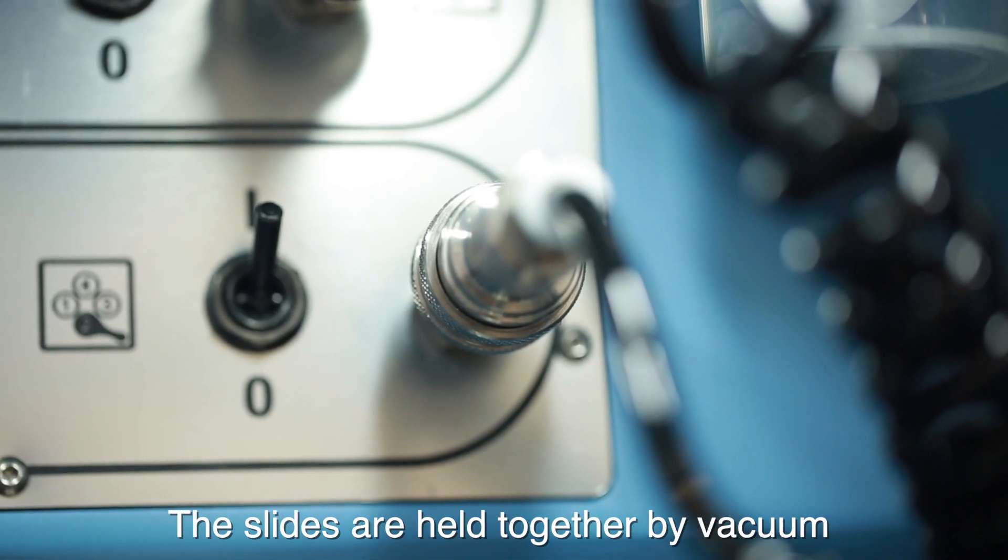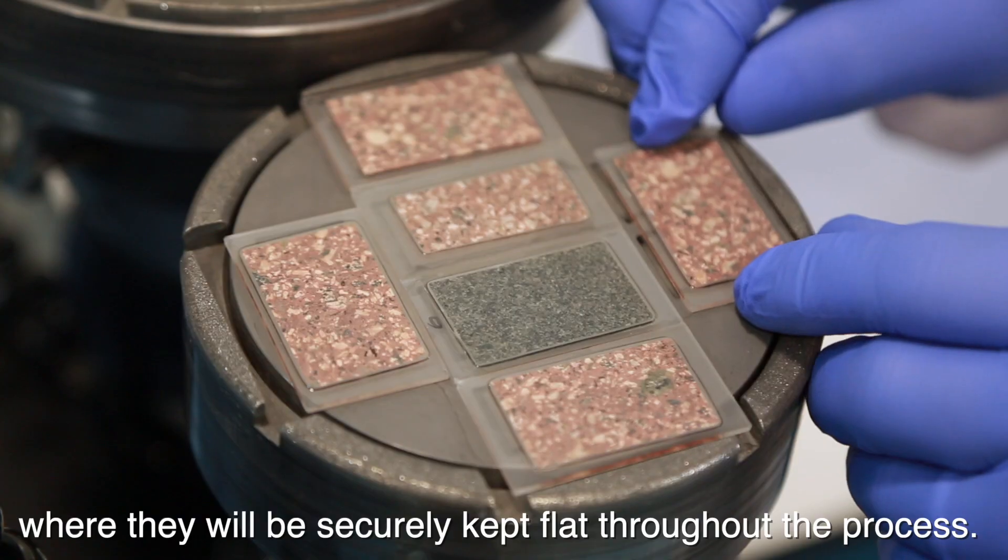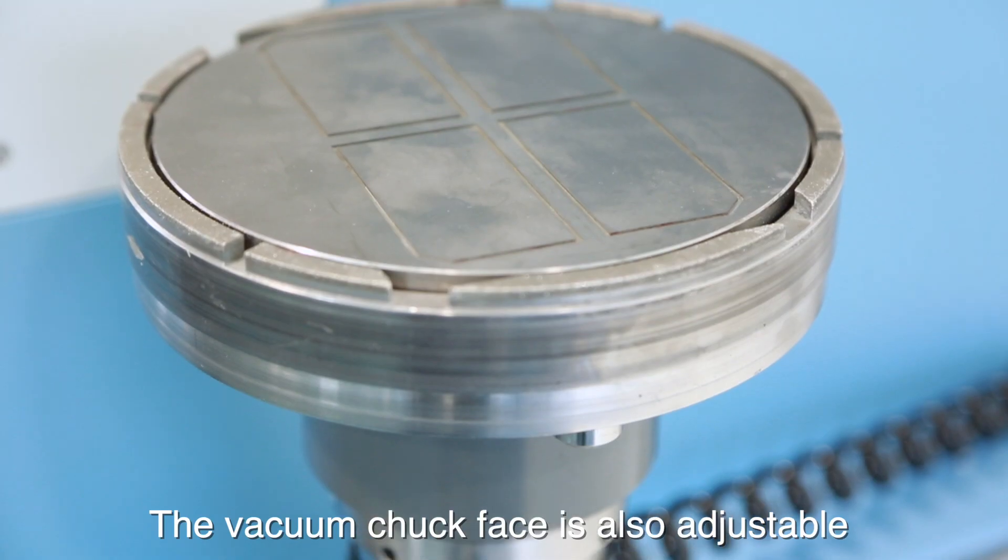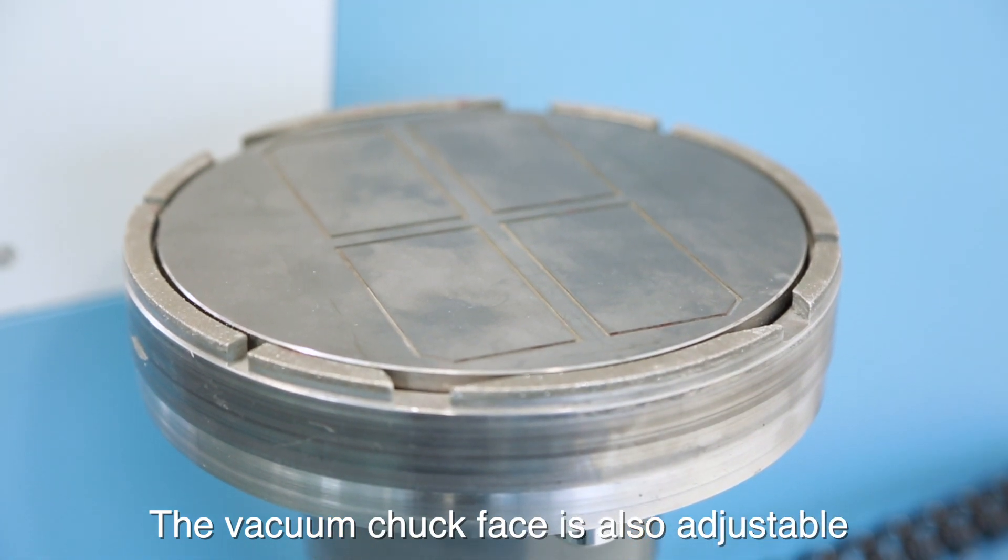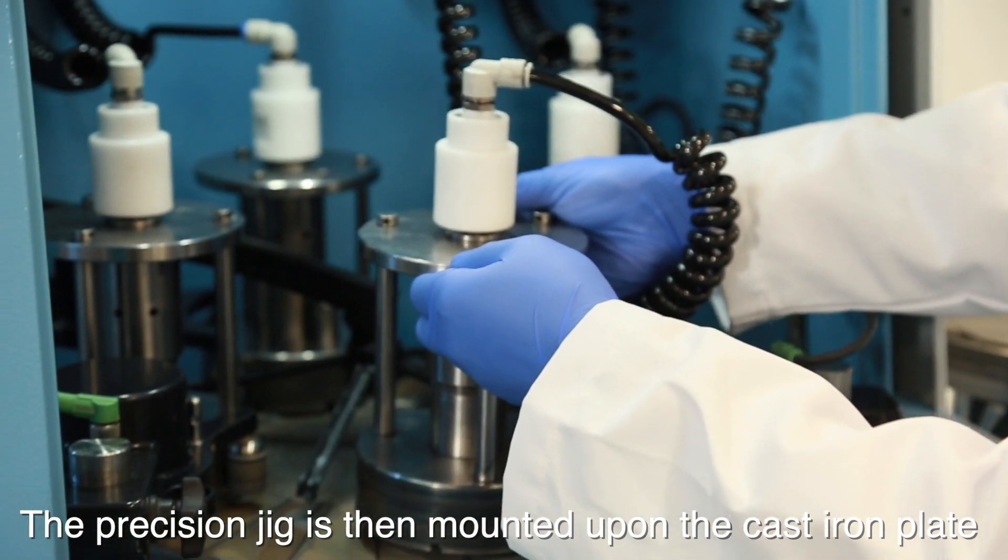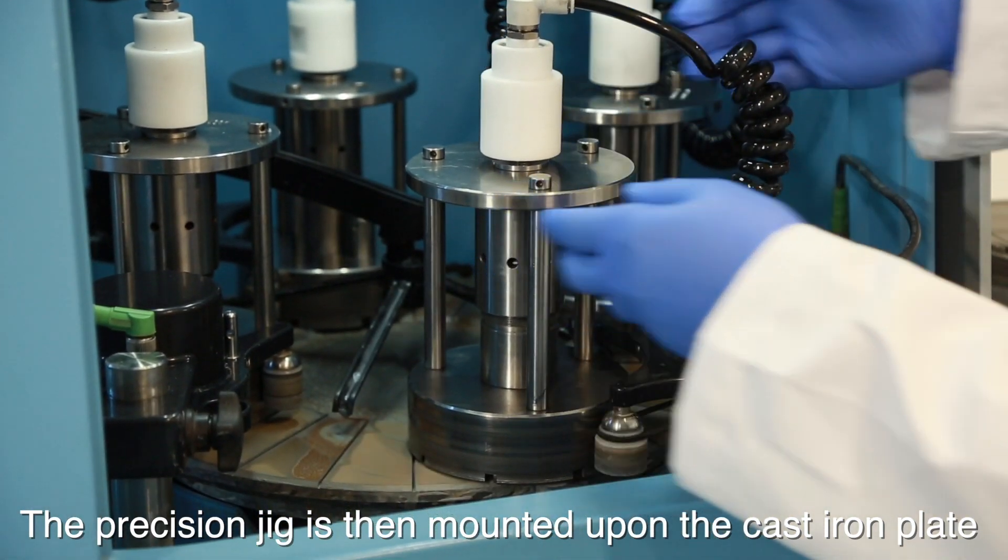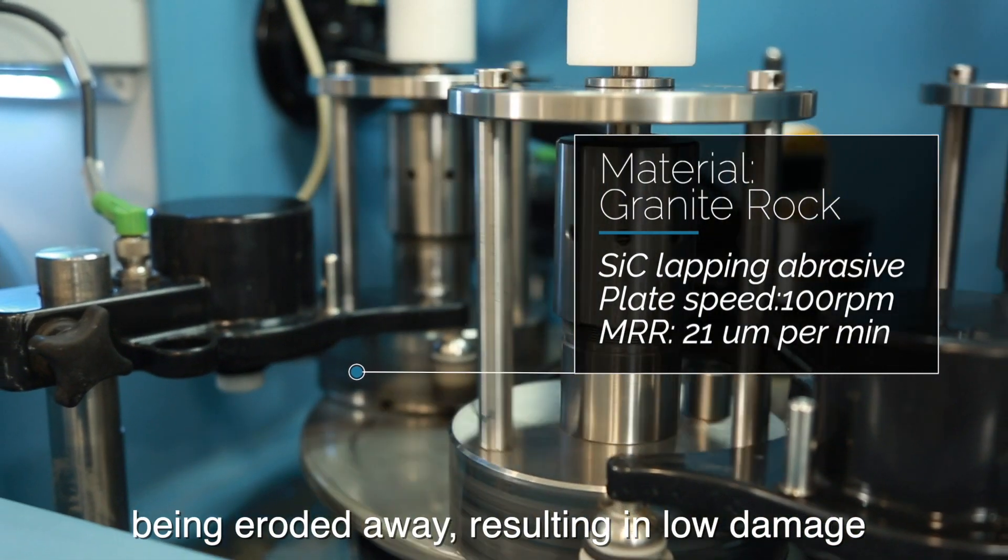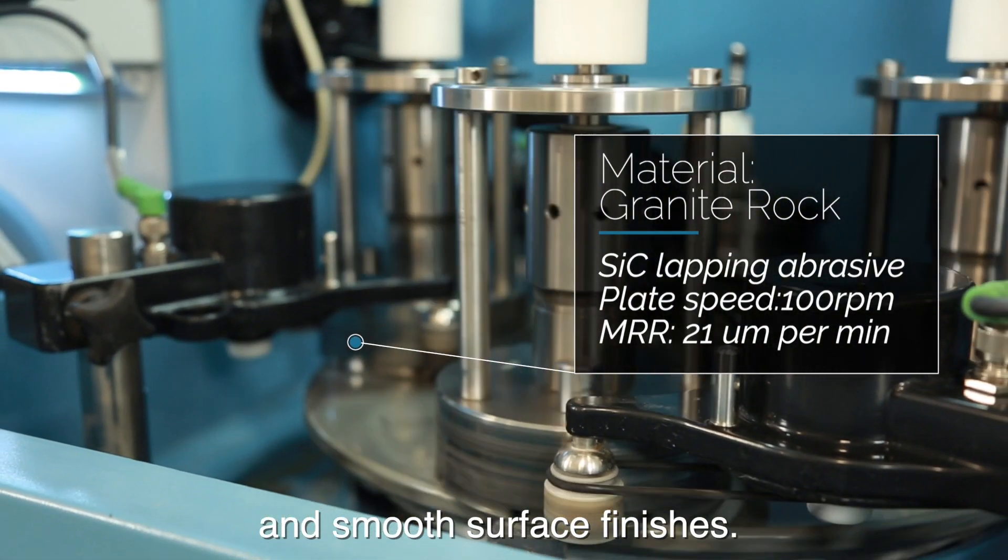The slides are held together by vacuum onto the chuck face, where they will be securely kept flat throughout the process. The vacuum chuck face is also adjustable for step height for high levels of accuracy. The precision jig is then mounted upon the cast iron plate for machine lapping with specimen material being eroded away, resulting in low damage and smooth surface finishes.